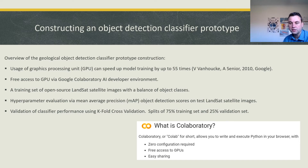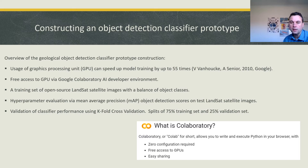We can test the predictive model against test sets of images and evaluate the prediction scores, and we can validate the performance of this model using k-fold cross validation to ensure that there was no bias in the training or the test sets that produced accurate predictive results.